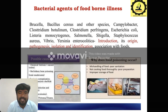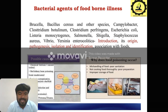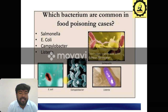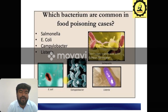Then what are the bacterial agents of foodborne illnesses? Brucella, Bacillus cereus and other species, especially Campylobacter, Clostridium, Clostridium perfringens, Vibrio, Yersinia — these are the major causes of foodborne illnesses. Which bacteria are common in food poisoning? Especially Salmonella is an important organism, and E. coli, Campylobacter, and Listeria. These are the major predominant organisms for food poisoning.